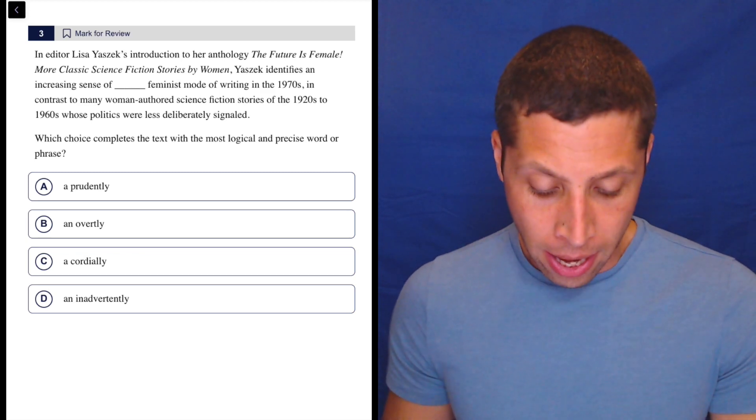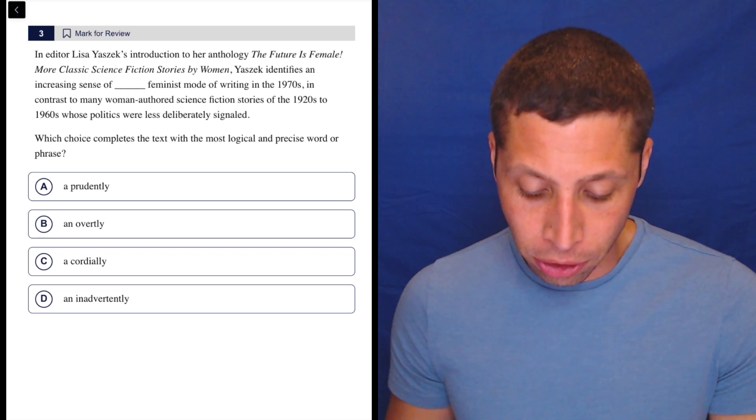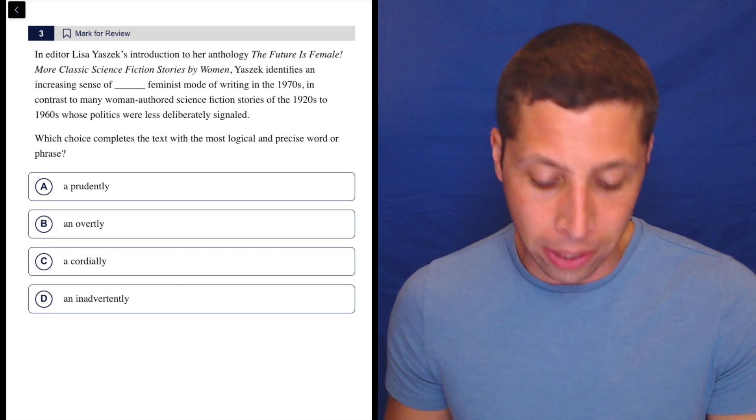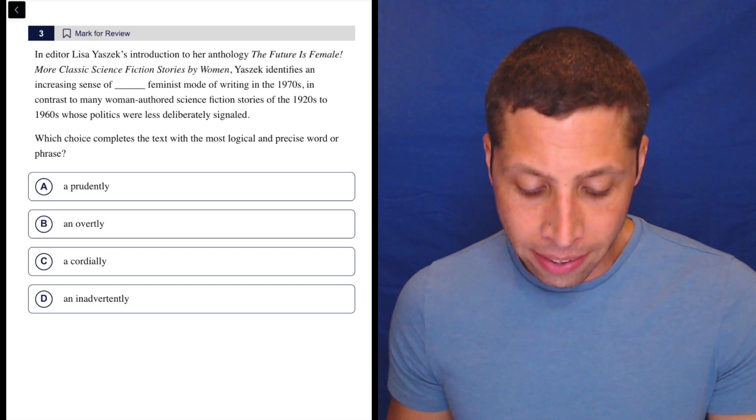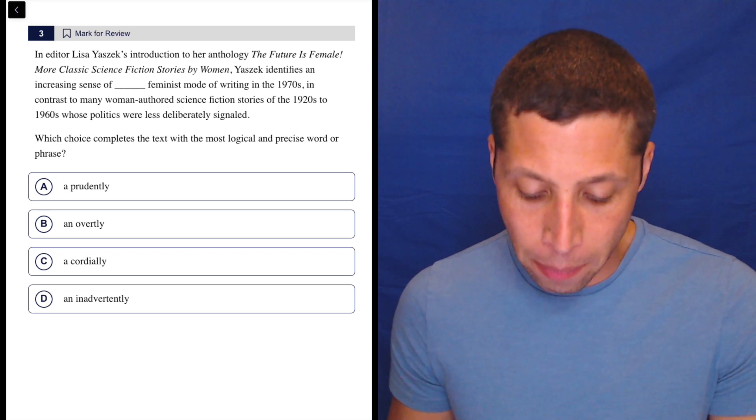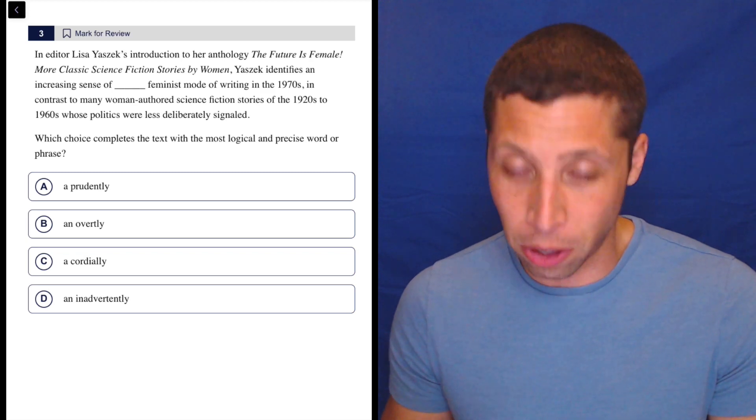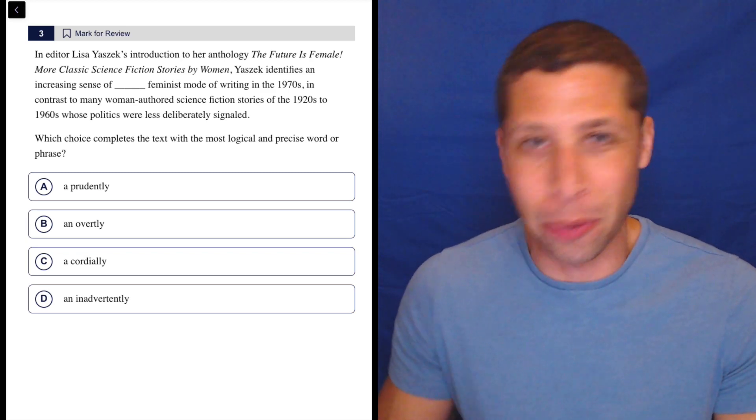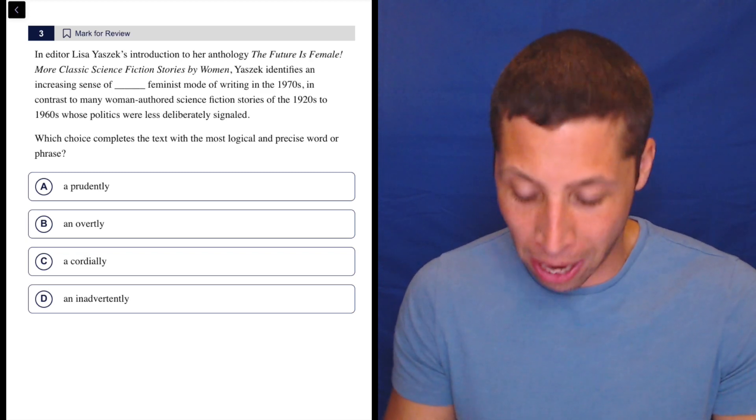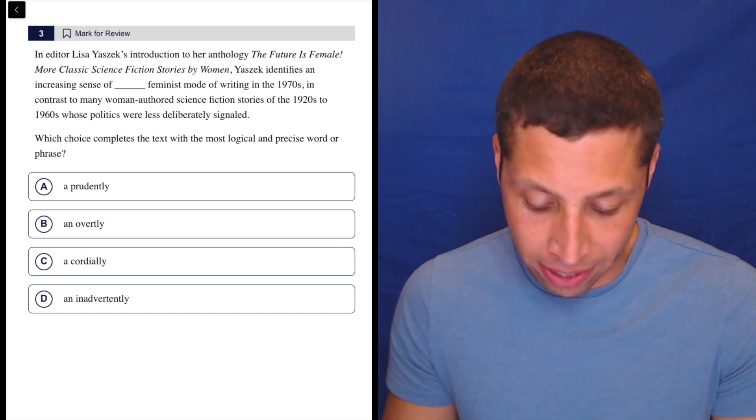So let's take a look at this passage. In editor Lisa Yassick's introduction to her anthology The Future is Female, more classic science fiction stories by women, Yassick identifies an increasing sense of blank feminist mode of writing in the 1970s. So it's hard to even read what they're saying here. Point is don't worry about it. We don't care about this person, we don't care about the book. We're just gonna care about how to fill in the blank and it's probably gonna come later in the sentence.